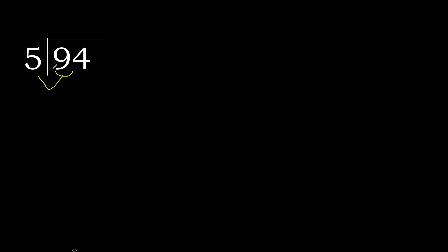94 divided by 5. Starting with 9: 5 multiplied by which number is nearest to 9 but not greater? 5 multiplied by 2 is 10 — that is greater. 5 multiplied by 1 is 5 — that is not greater. So we use 1. 9 minus 5 is 4.